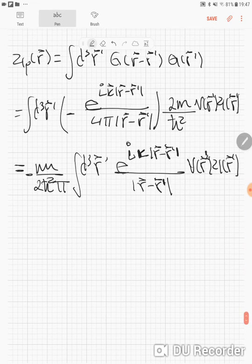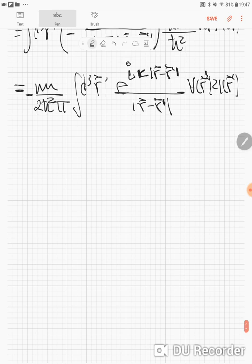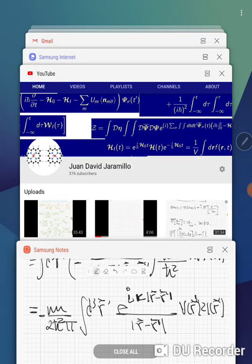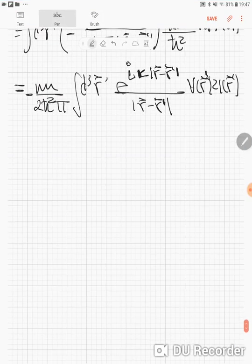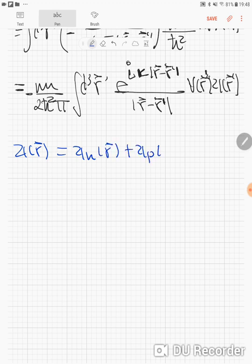Now, the total solution for differential equations, we know that the total solution is given by the homogeneous solution plus the particular solution, which is in the presence of some potential or some external term.